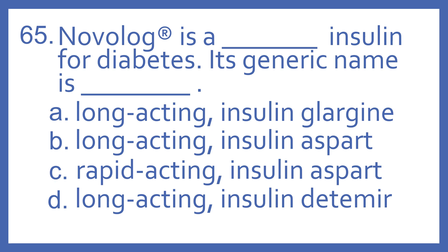C. Rapid-acting insulin aspart. NovaLog is a rapid-acting insulin for diabetes. Its generic name is insulin aspart. Insulin glargine, which is Lantus or Basaglar, is a long-acting insulin. Insulin detemir, which is Levemir, is also a long-acting insulin. Insulin aspart and lispro are the two rapid-acting insulins.